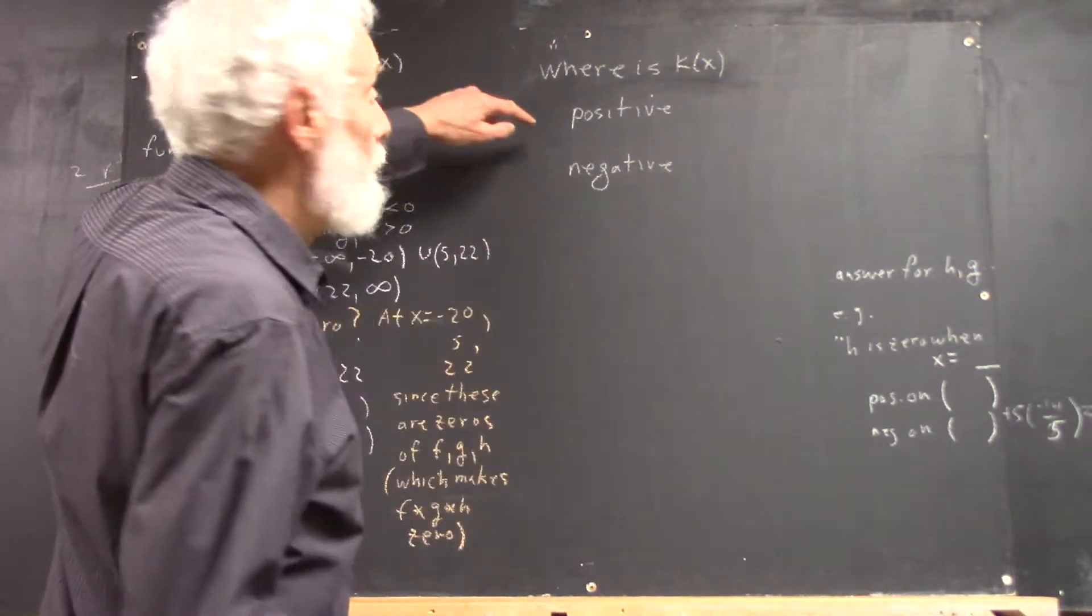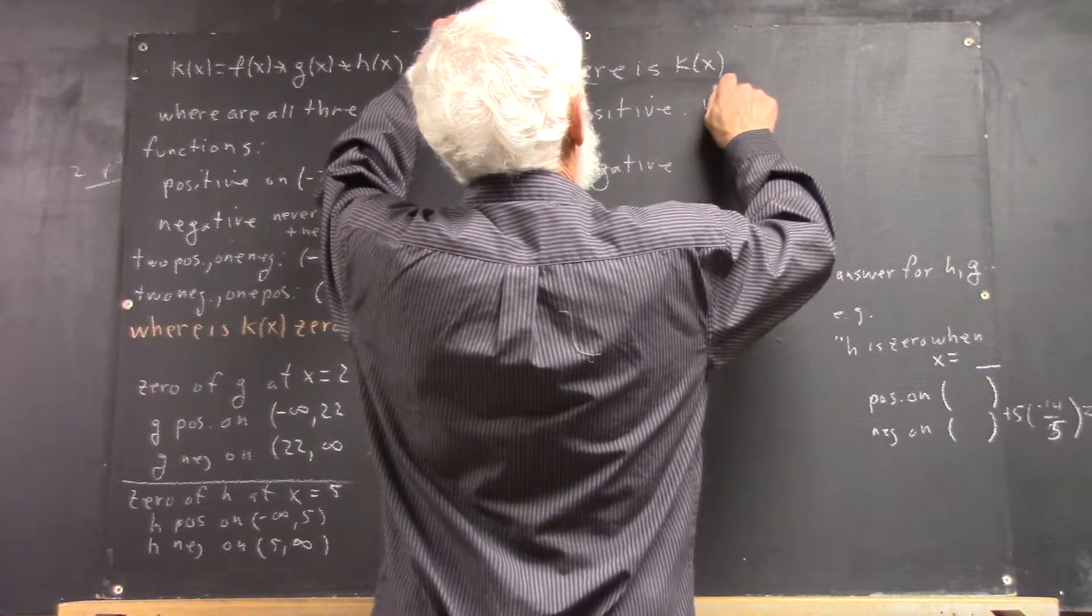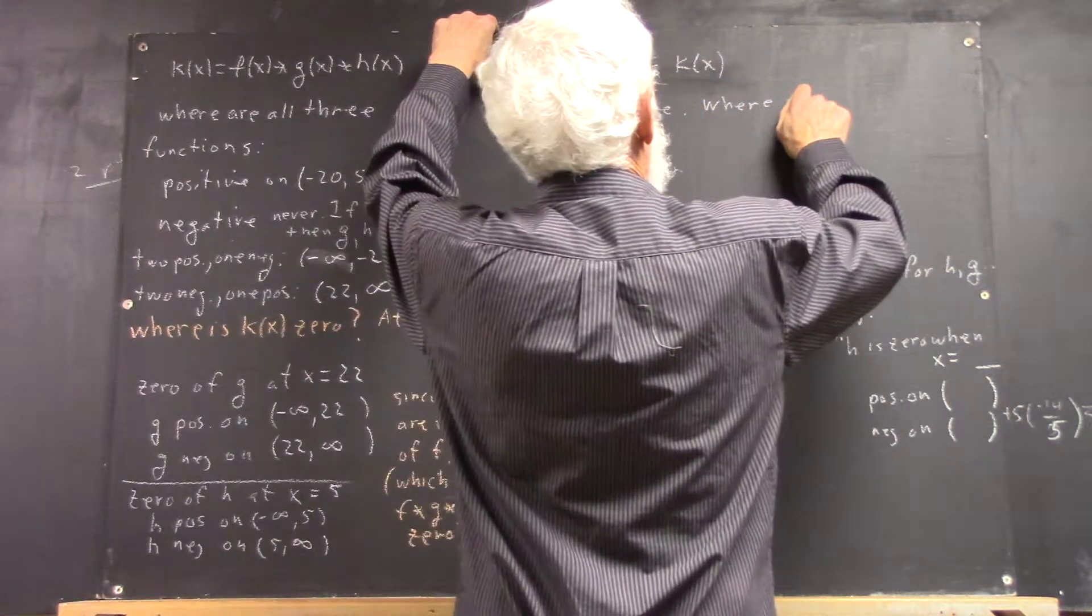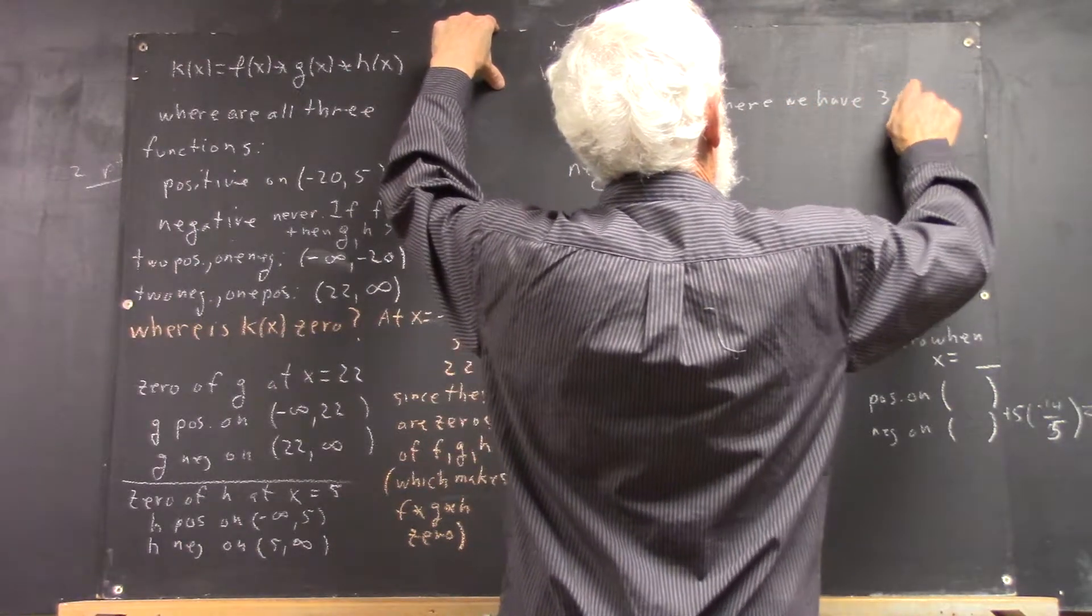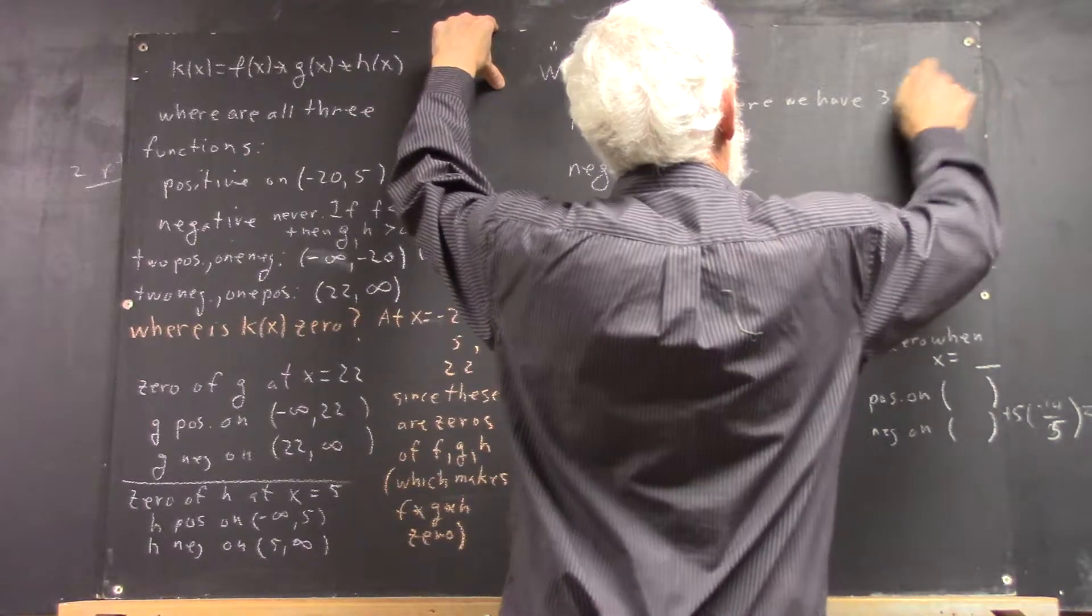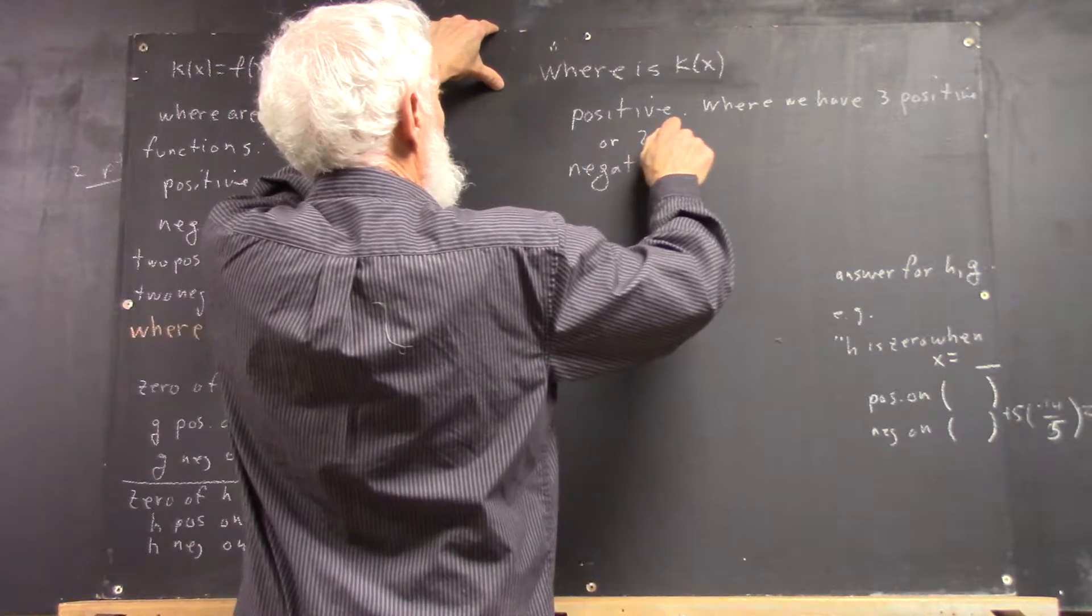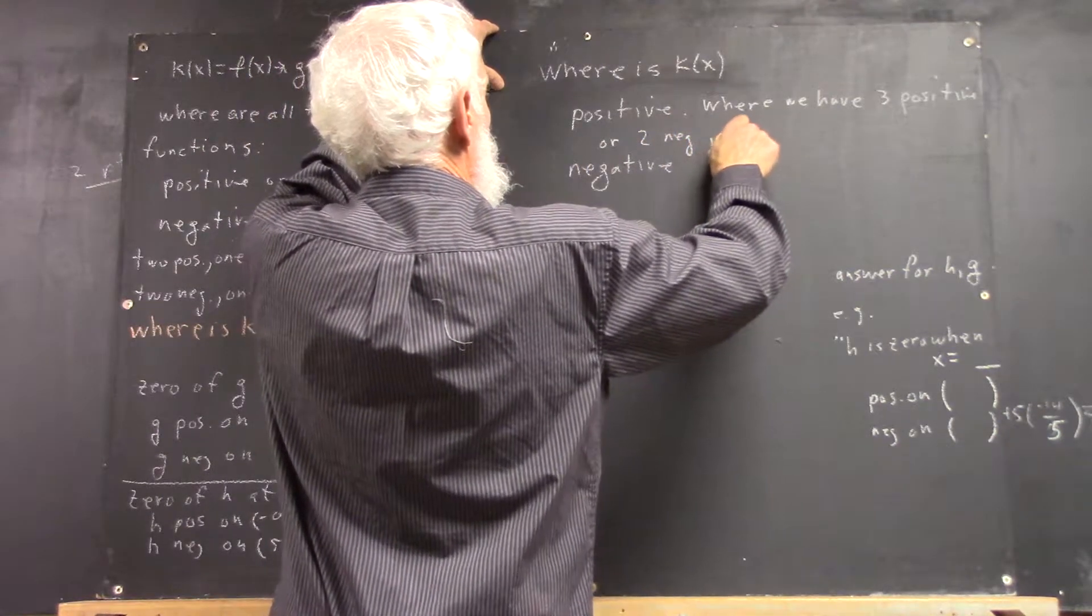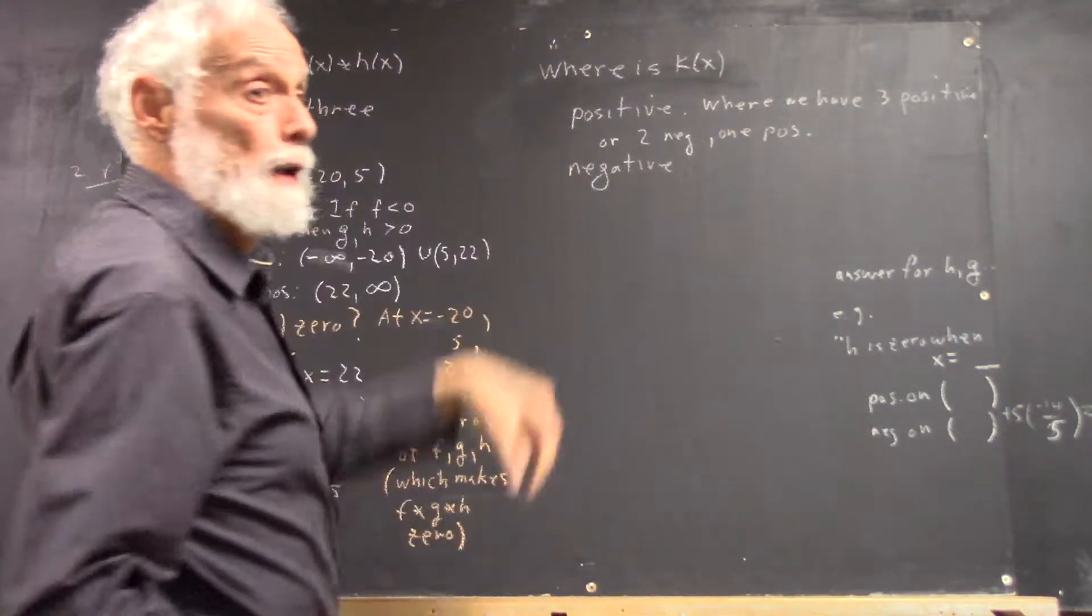Okay, where is k of x positive? Where we have three positive values, or two negative, one positive, right?